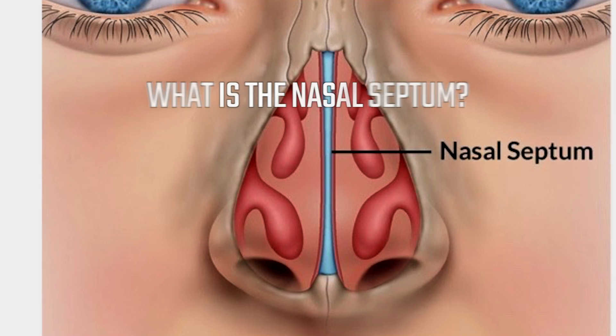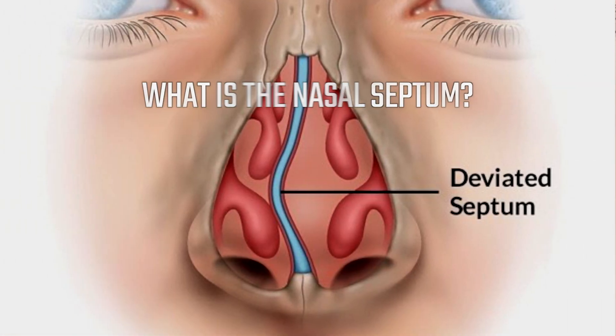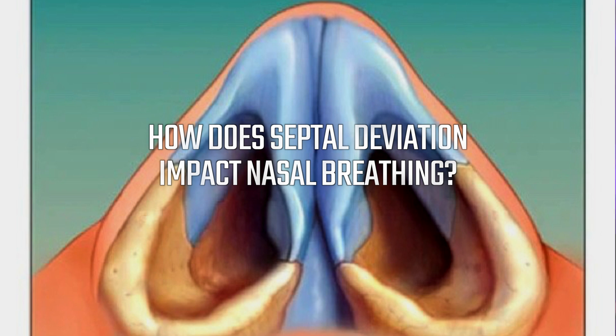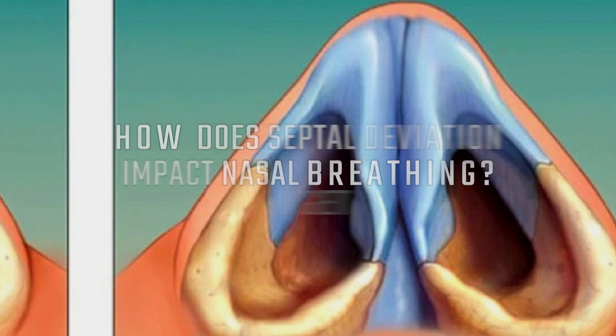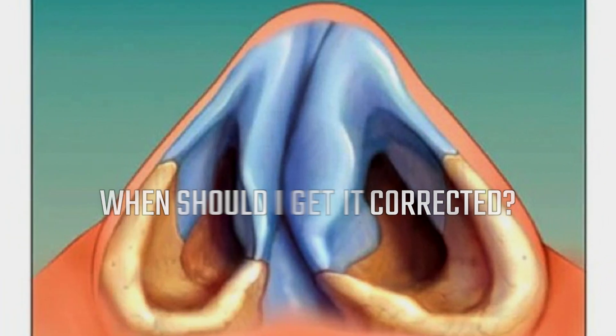What is the nasal septum and why is it deviated in most adults? How does the septal deviation impact nasal breathing? And most importantly, when should I get it corrected?